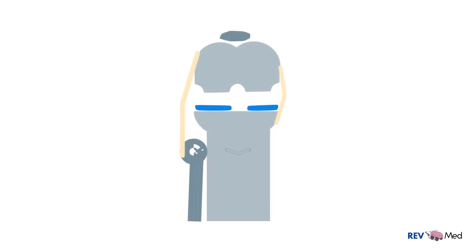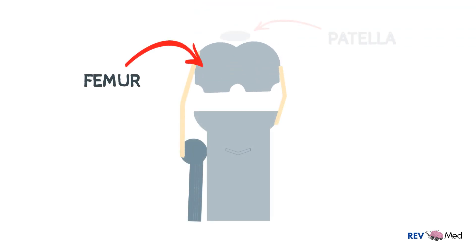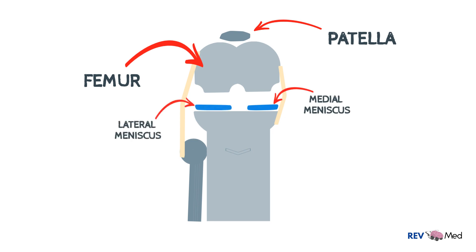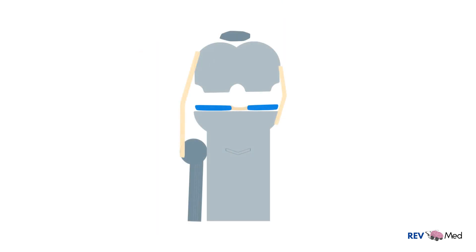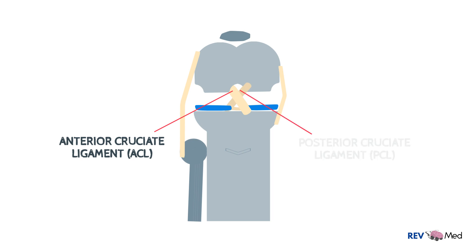Let's draw the right knee joint in flexion. Here we'll draw the femur and then the patella on top because of flexion. Here are the medial and lateral menisci, and anteriorly is the transverse ligament joining the menisci. Inside the knee joint we have two important ligaments: the anterior cruciate ligament (ACL) and the posterior cruciate ligament (PCL).